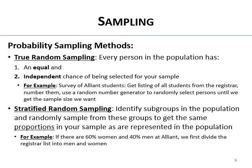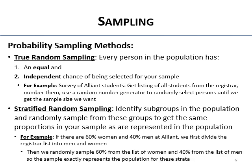For example, if you know there's 60% women and 40% men at Alliant, you would divide the registrar list into men and women, then randomly sample 60% women and 40% men. That ensures you have the same sex representation in your sample as in the population — that's stratified random sampling. The important point is you divide into groups and then randomly select from each.